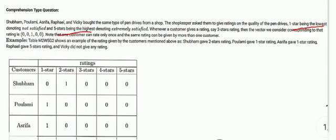Whenever a customer gives a rating, say a three-star rating, the vector we consider corresponding to that rating is [0, 0, 1, 0, 0]. We note that one customer can rate only once, and the same rating can be given by more than one customer.